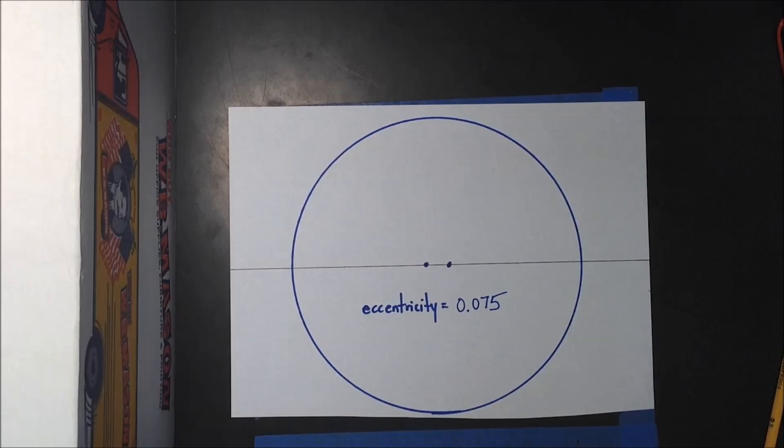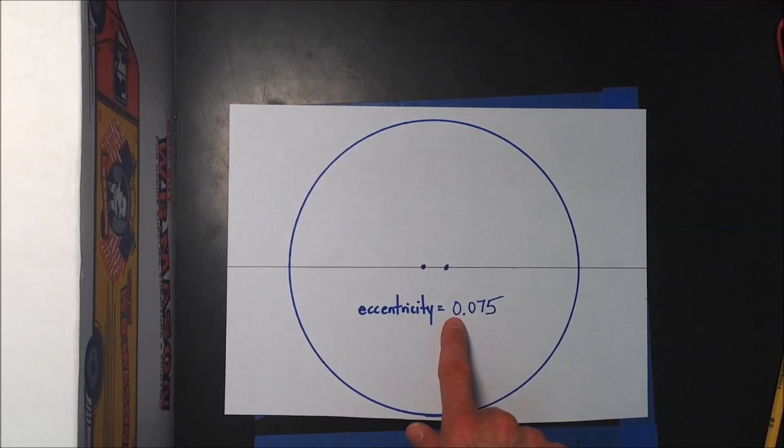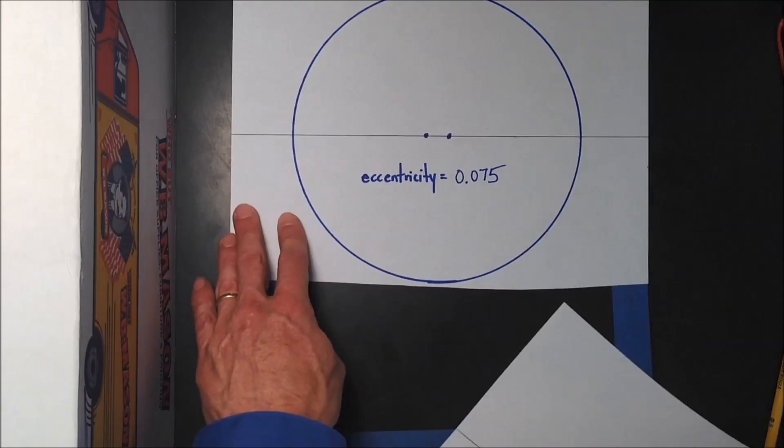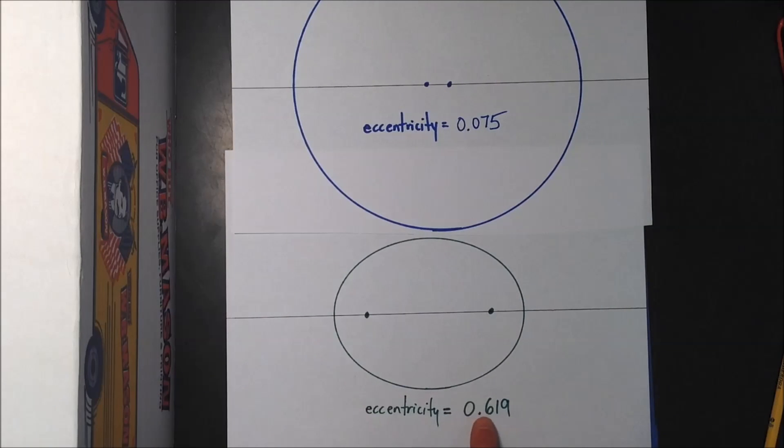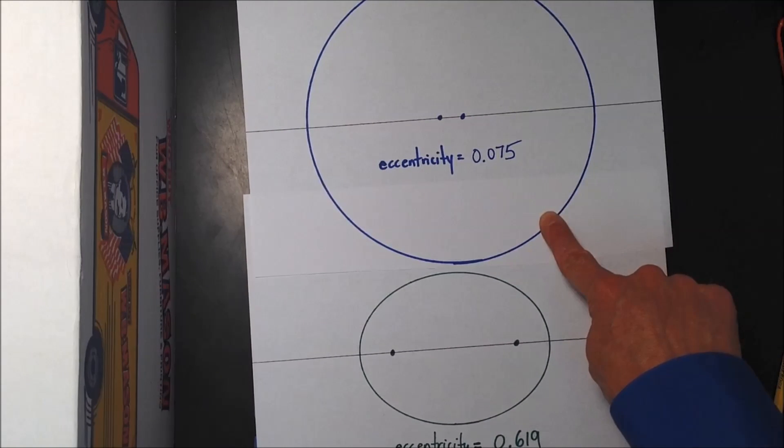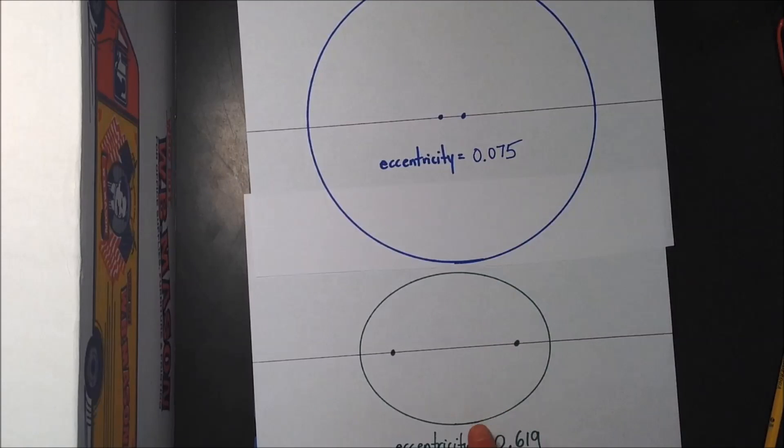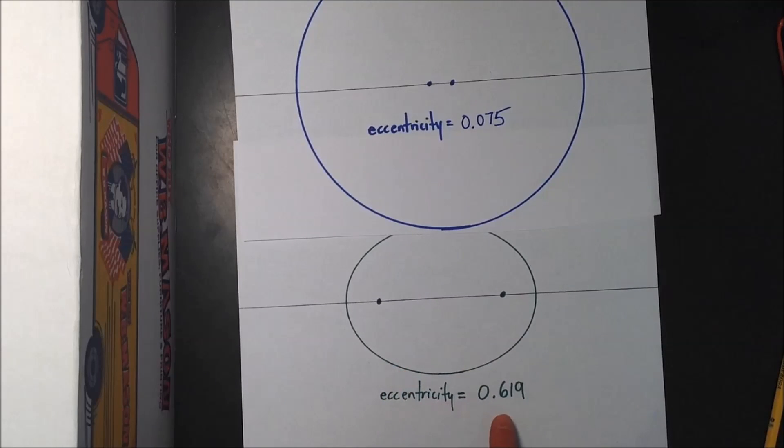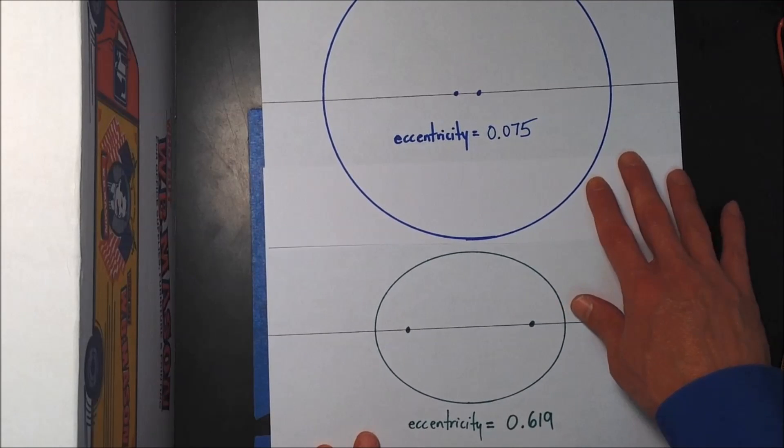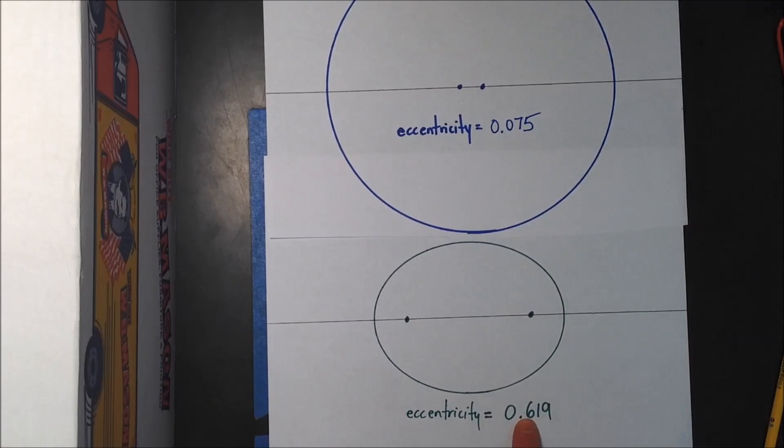So now let's compare the two ellipses that we drew. This was the first one. I just went over it in blue. We drew an eccentricity of 0.075, which is compared to the second one where I moved the pins a little further apart, and that had an eccentricity of 0.619. So we would say this is less elliptical because it has a lower number, closer to 0. This one down here is more of an ellipse or more elliptical, and you can tell because it has a higher eccentricity number closer to 1, which is the straight line. So that is a key thing to comparing elliptical orbits and elliptical shapes using the eccentricity.